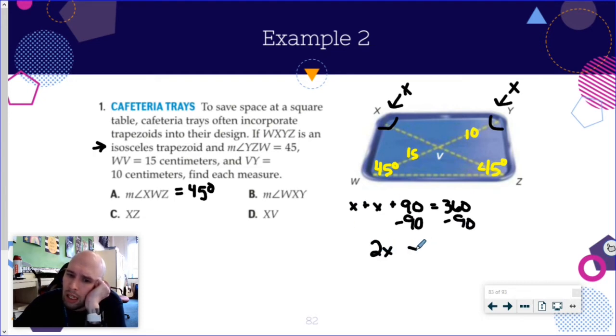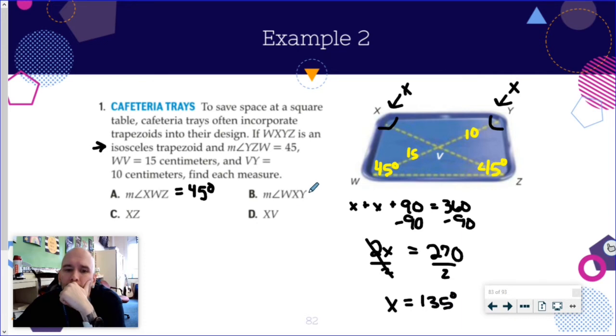And this is X plus X, which is two Xs. So 2X equals 270. Divide by 2. Divide by 2. Divide by 2. You get 135. Alright. So this guy is 135 degrees.